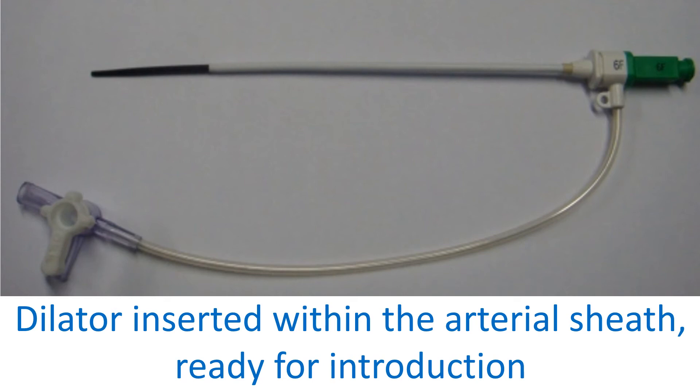The sidearm is used for flushing the catheter with heparinized saline in between catheter exchanges to prevent thrombus formation. The sidearm can also be used to measure arterial pressure soon after introduction of the sheath. The pressure waveform will be damped once the catheter is inside the sheath. If simultaneous sheath pressure monitoring is needed, it is better to use a larger sheath than the catheter to be used.